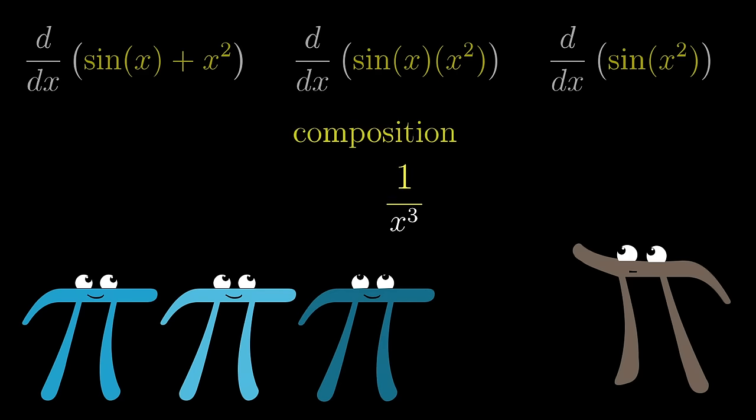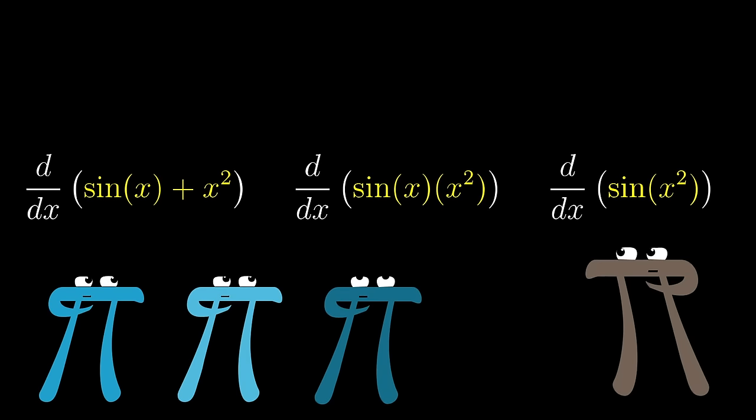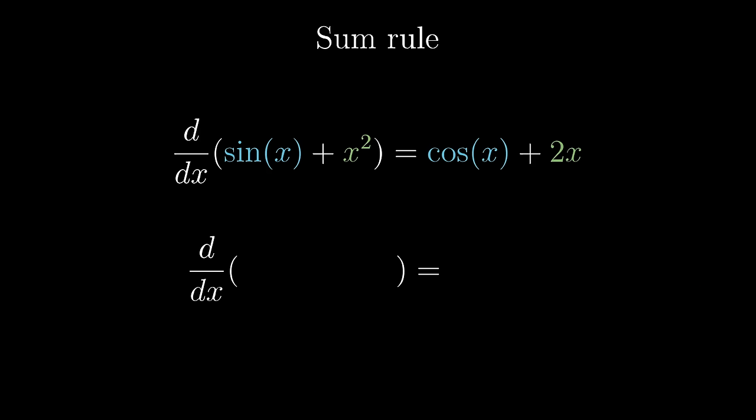So the question is, if you know the derivative of two functions, what is the derivative of their sum, of their product, and of the function composition between them? The sum rule is easiest, if somewhat tongue-twisting to say out loud: the derivative of a sum of two functions is the sum of their derivatives.